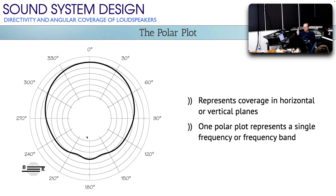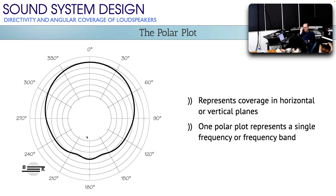A polar plot represents the loudspeaker dispersion or coverage in horizontal or vertical planes. The disadvantage is it's not a super efficient way of demonstrating this information because it really only shows one frequency and one axis at a time. You can superimpose multiple graphs on top of it to show three or four frequencies at once, but then it gets really hard to read.